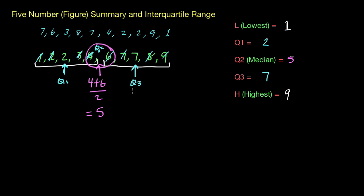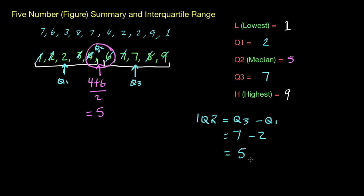All we need to do is find the interquartile range. The interquartile range simply means how far is the distance between Q3 and Q1 — in other words, IQR equals Q3 take away Q1. These Q values — Q1, Q2, Q3 — are the points where we've broken the data into four quarters. So we find the distance: Q3 was seven and Q1 is two, so seven take away two gives an IQR of five. The interquartile range is different to the range — the range goes from start to end: nine take away one gives us eight.